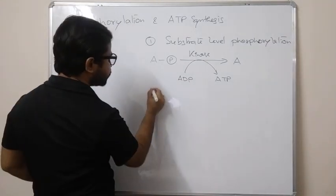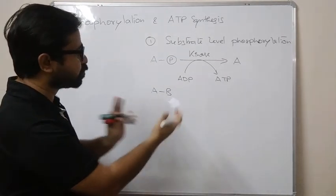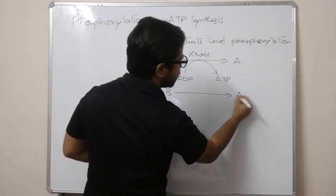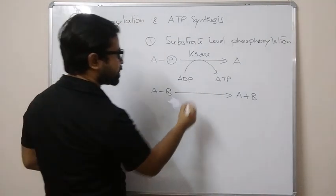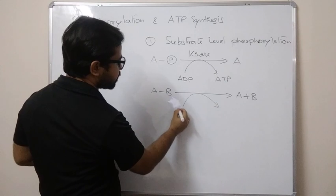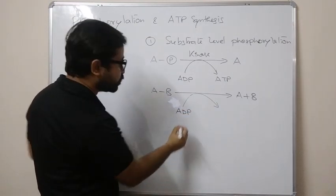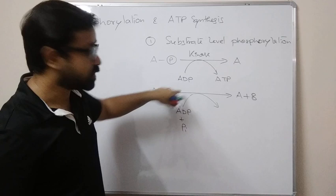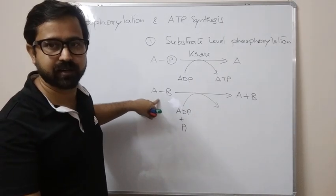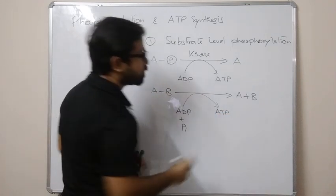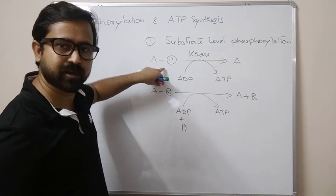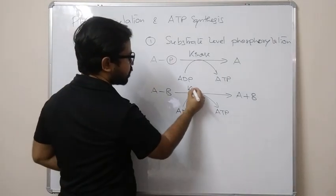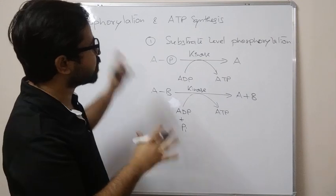Suppose compounds A and B are connected by a high energy bond. When that compound is used, A and B are freed, and that bond energy which is released is used to phosphorylate ADP. In substrate level phosphorylation, the substrate itself provides the phosphate. The enzyme used is kinase.